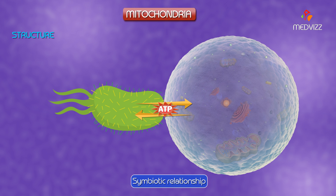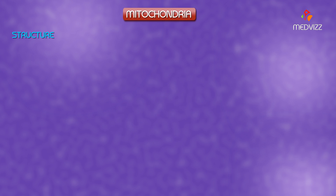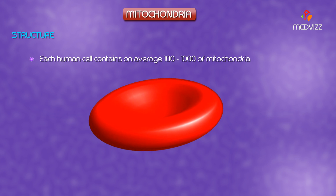However, this endosymbiotic hypothesis is not universally accepted and has been challenged. Each human cell contains on average hundreds to thousands of mitochondria.